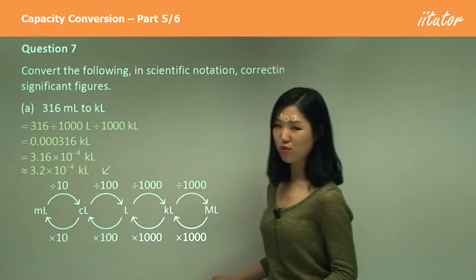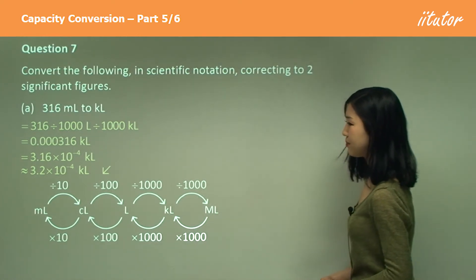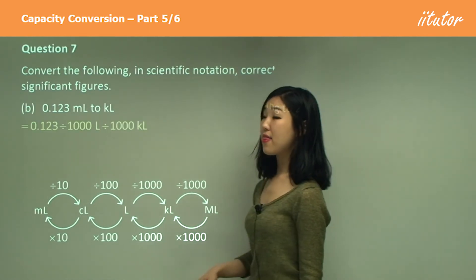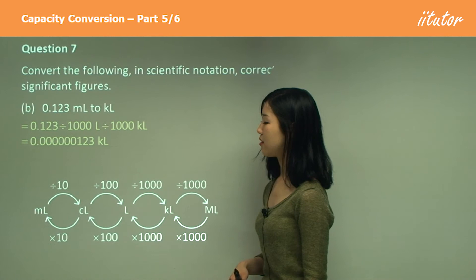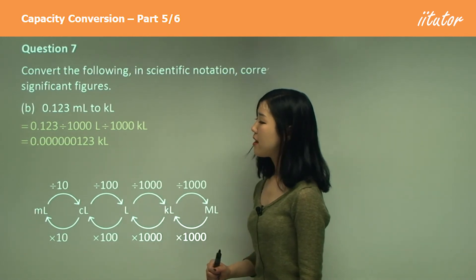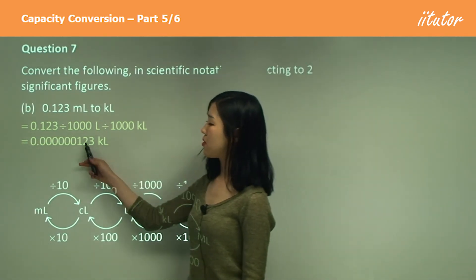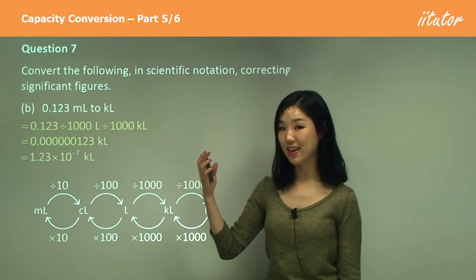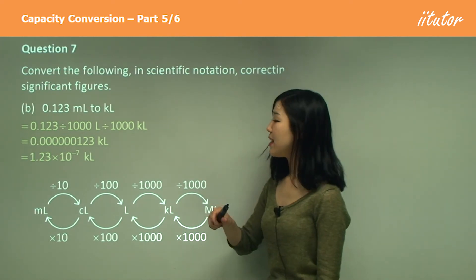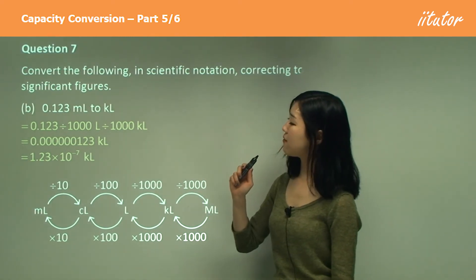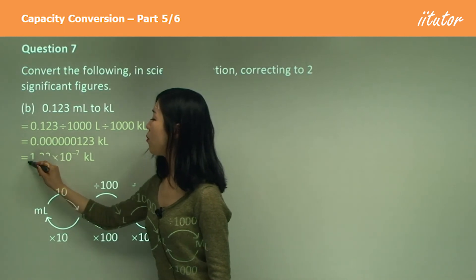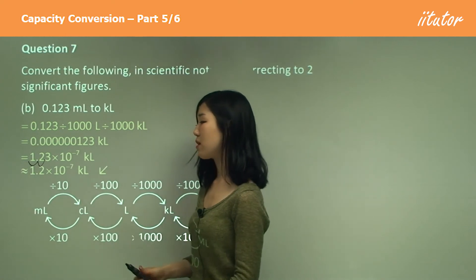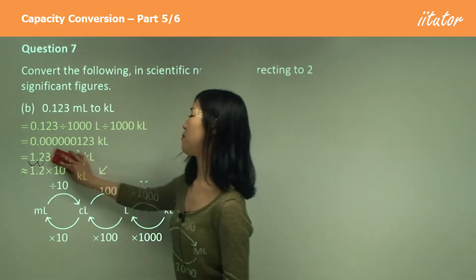Significant figures again — you should be very good at this. Millilitres to kilolitres, same thing: divide by a thousand two times because it's small to large. We've got lots of zeros, so I put the decimal there — 1.23 times 10 to the power of negative 7, because it's going back seven places. Now for two significant figures, we go 1, 2 — but 3 is less than 5, so I don't have to round up. So it's just 1.2 times 10 to the power of negative 7.